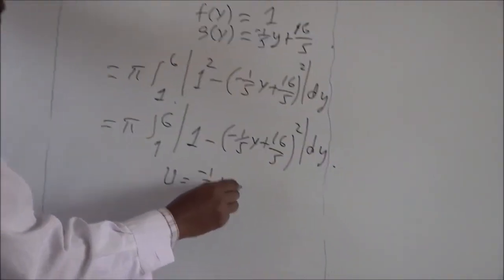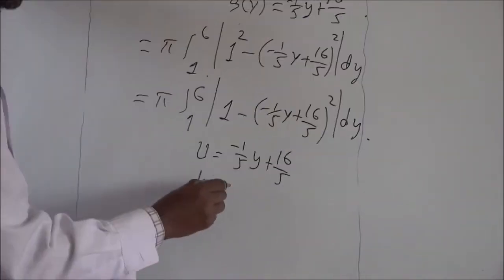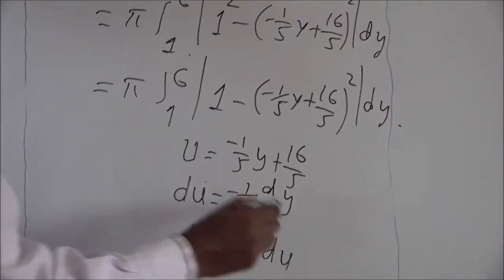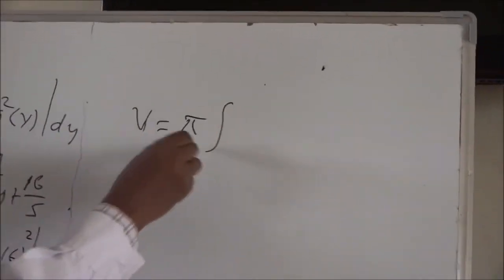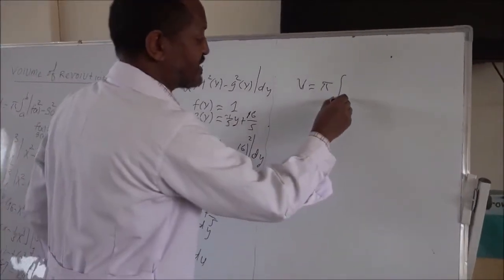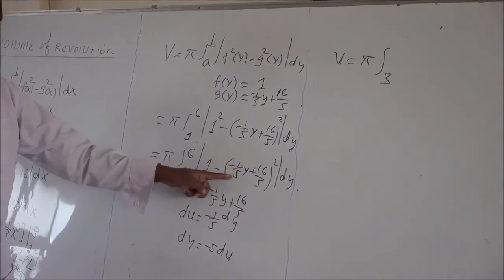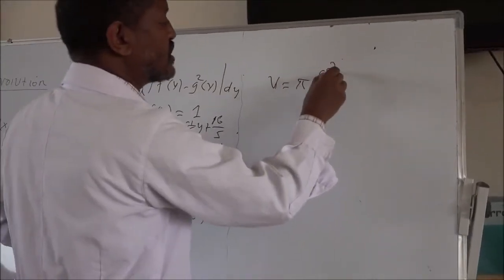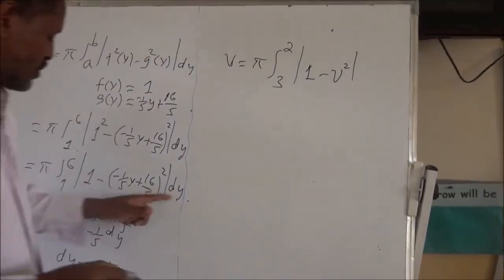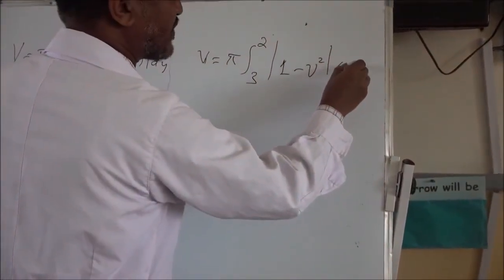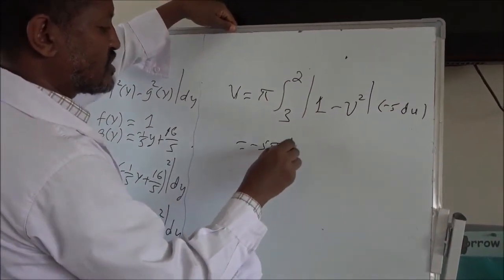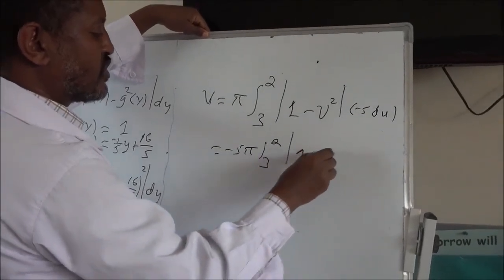We apply integration by substitution. Let u = −(1/5)y + 16/5. Then du = −(1/5)dy, meaning dy = −5 du. When y = 1, u = −1/5 + 16/5 = 15/5 = 3. When y = 6, u = −6/5 + 16/5 = 10/5 = 2. Substituting, we get π times the integral from 3 to 2 of the absolute value of 1 minus u squared times (−5 du). Taking −5 outside gives −5π integral from 3 to 2, or equivalently 5π integral from 2 to 3 of the absolute value of 1 minus u squared du.